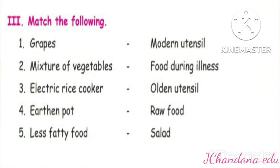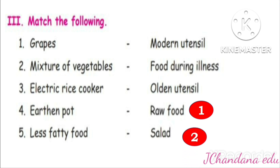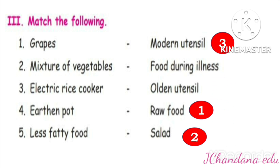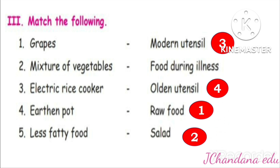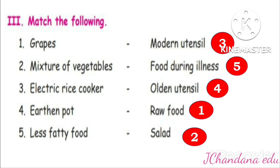Section three: Match the following. Grapes – Raw food. Mixture of vegetables – Salad. Electrical rice cooker – Modern utensil. Earthen pot – Olden utensil. Less fatty food – Food during illness.